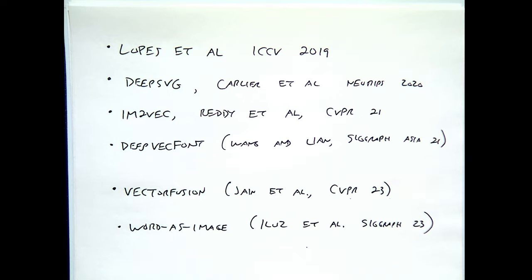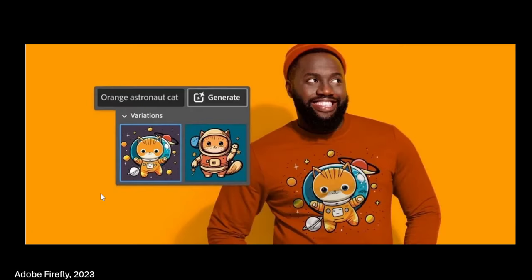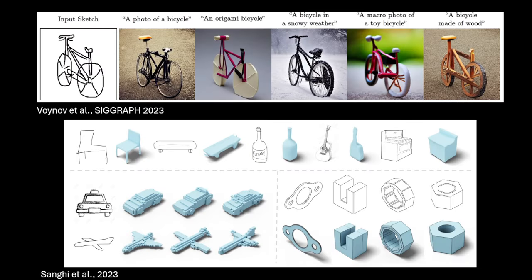In the same vein as vector graphics is the idea of sketches. If you're printing on a sweatshirt, you can't use a bitmap — you need a vector graphic. There's been a lot of work on sketch-based generation. Using ControlNet, going from a sketch to a 2D object is within reach. There's a paper by Voynov et al. from this year's SIGGRAPH on this. You can also use a sketch to get to a 3D object — work by Sanghi et al. in 2023.